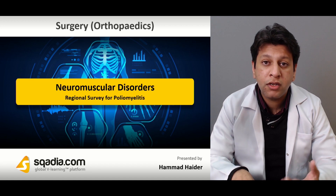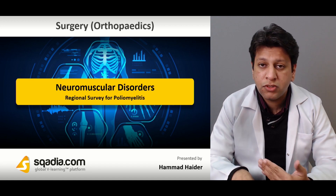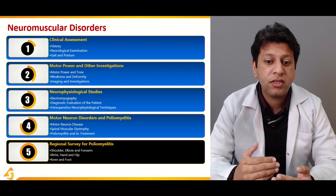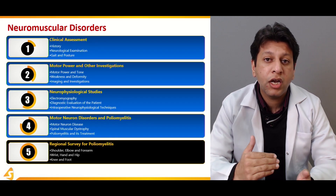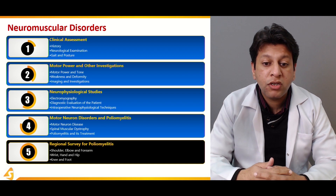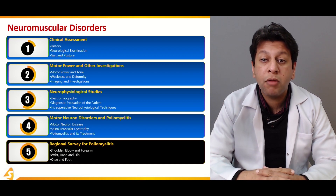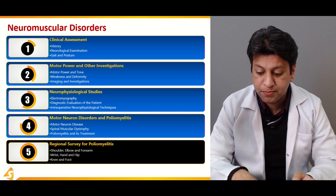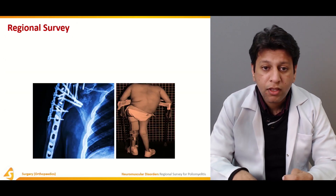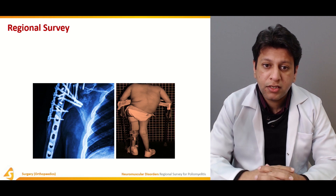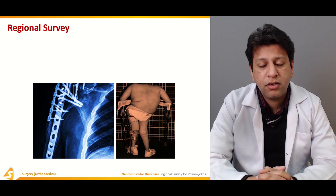In this section we will be going through how to overview a patient of poliomyelitis and work out what is exactly wrong with the patient and what could be done. We will go through the regional survey for the shoulder, elbow, forearm, wrist, hand, hip, knee, and foot — almost any region can be affected with poliomyelitis.